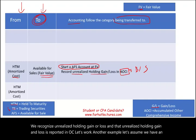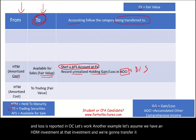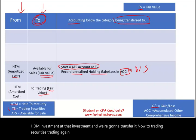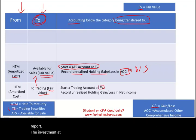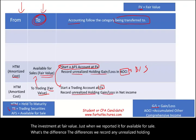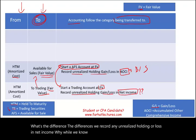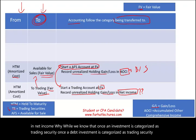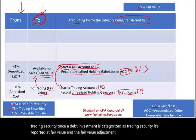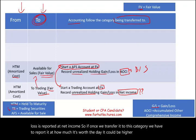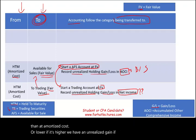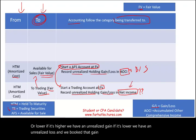Let's assume we have an HTM investment and we're going to transfer it to trading securities. Trading is reported at fair value, just like available for sale. We will start a trading security account and report the investment at fair value. The key difference is that we record any unrealized holding gain or loss in net income. Once transferred to trading, it's reported at fair value and any unrealized gain or loss hits net income — not OCI.